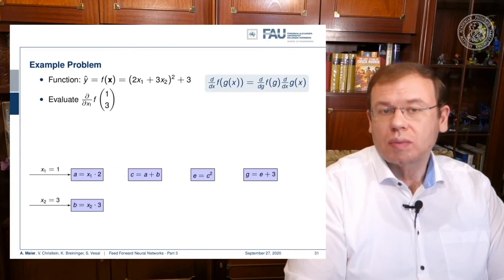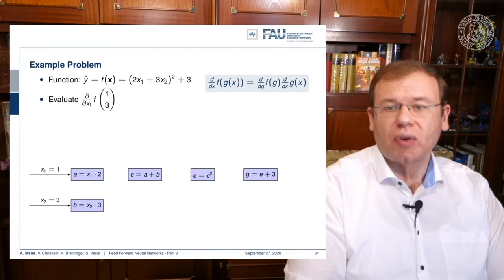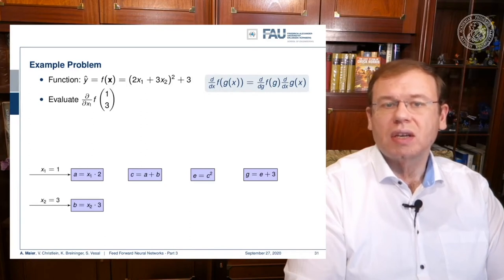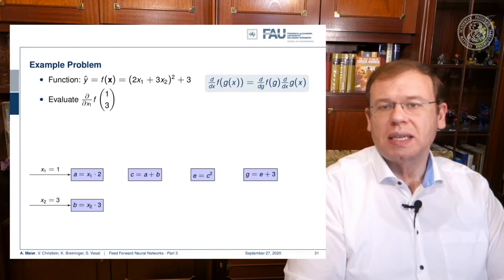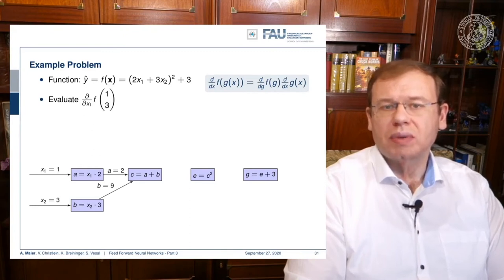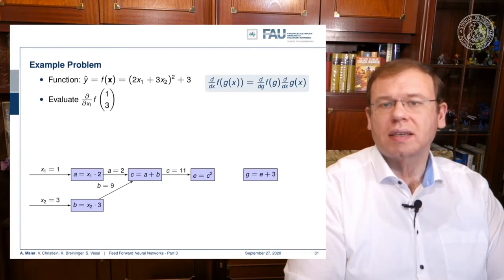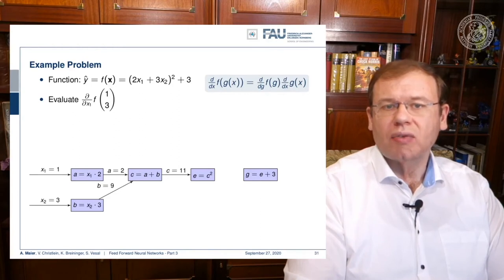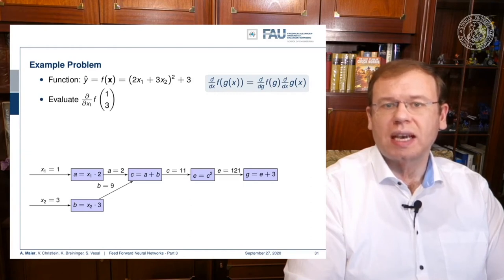Let's go back to our example and apply backpropagation to it. We compute the forward pass first. In order to be able to compute the forward pass, we plug in the intermediate definitions. We decompose this into a, that is 2 times x1, and b, that is 3 times x2. We compute those and get the values 2 and 9 for a and b. This allows us to compute c that is the sum of the two, which equates to 11. Then we compute e from that, which is nothing else than 2 to the power of c. This gives us 121. Now we finally compute g, that is e plus 3. In the end we end up with 124.